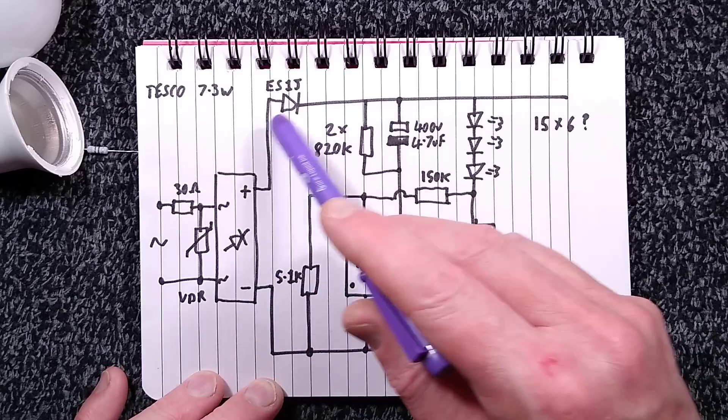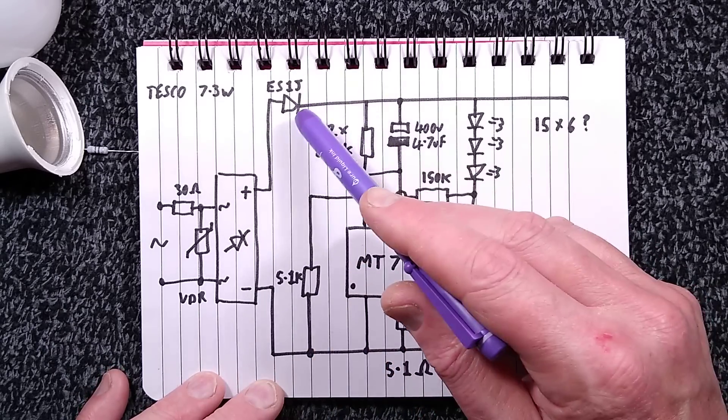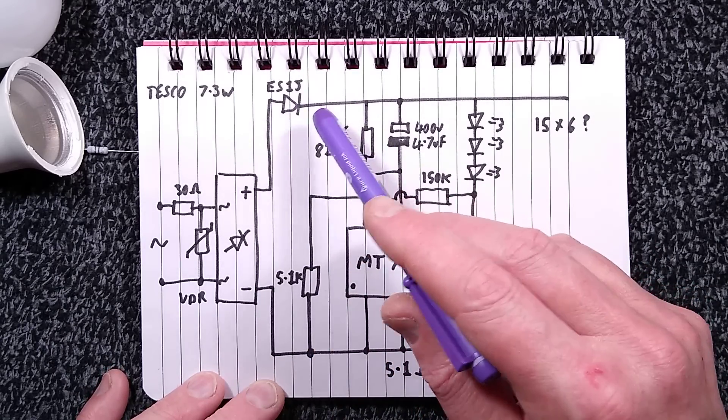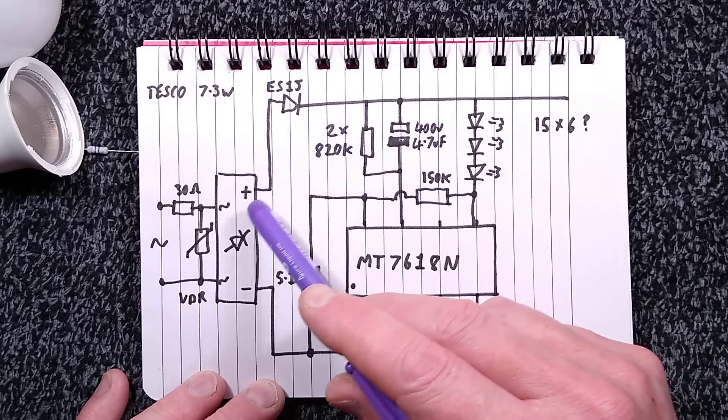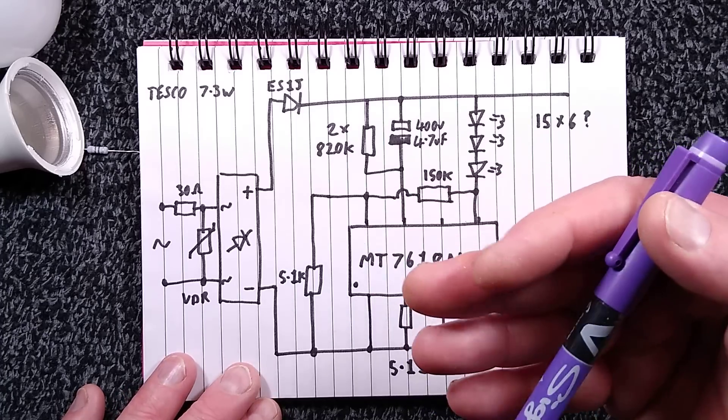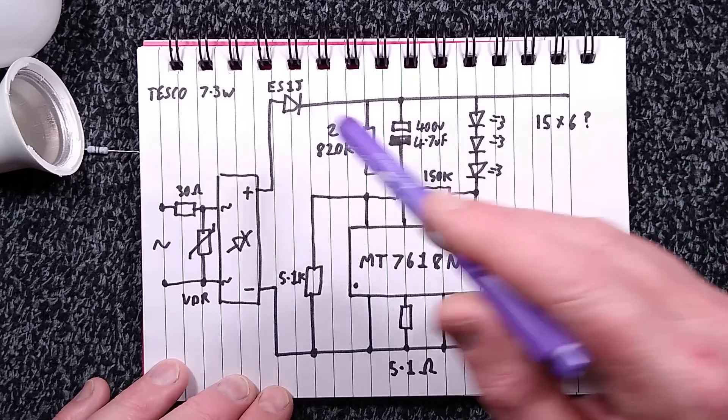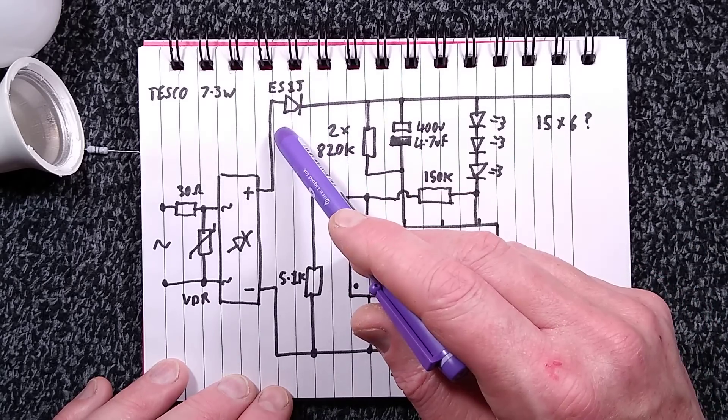And then rather perplexingly, there is this high-speed ES1J diode. And the only thing I can think about with this diode is that because this is a high-speed diode, it effectively means that the bridge rectifier acts as a basically high-speed bridge rectifier in the sense that it's got a fast recovery time. I really haven't a clue about why. I don't know why they've done this.